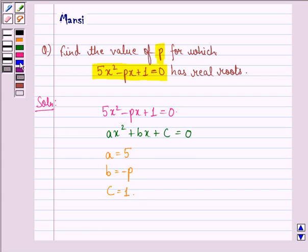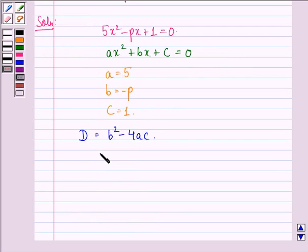Now we know that the discriminant is equal to b² - 4ac. So we simply put in the values here and we get (-p)² - 4(5)(1). This is equal to p² - 20.